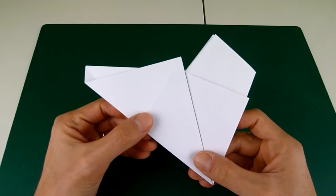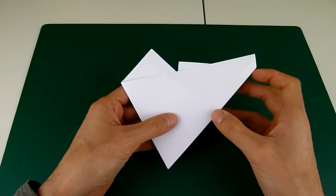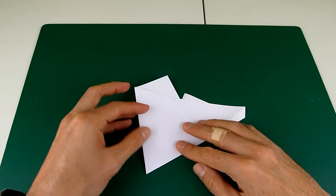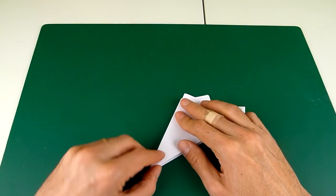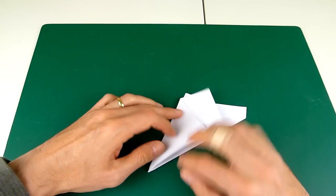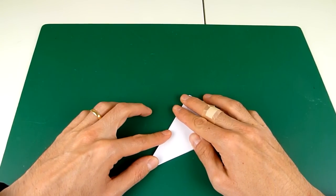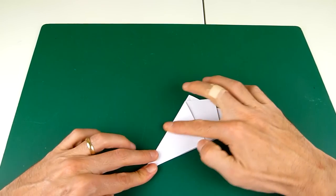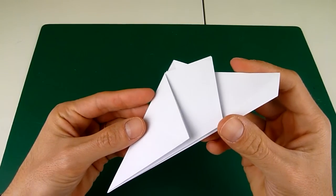Okay, so your paper should look something like this. Now turn it over, and we're just going to fold this in half. So take the left side and fold it to the right.